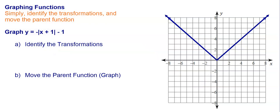Let's look at another one. In this one, I have the negative absolute value of x plus 1 minus 1. As I identify these: the plus 1 on the inside means I'm going to move left 1, the minus 1 on the outside means I'm going to go down 1, and then the negative in front means I'm going to flip it.